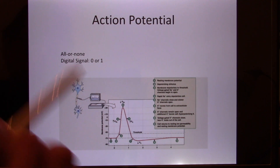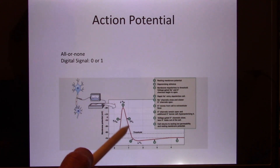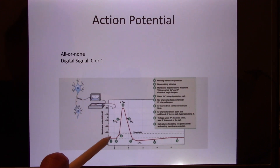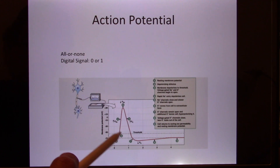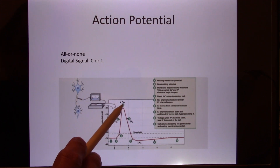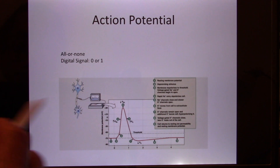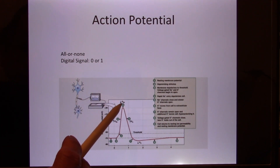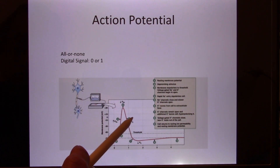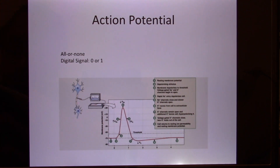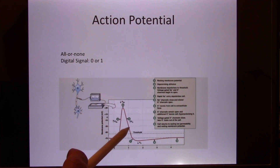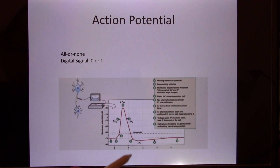The action potential starts from minus 70 millivolts. When sodium permeability quickly increases, this is depolarization. Then the sodium channels close, and the voltage-gated potassium channels open — about one millisecond slower. When potassium channels open, the membrane is most permeable to potassium again, and the inside voltage drops back quickly. The entire action potential takes about three milliseconds to complete.